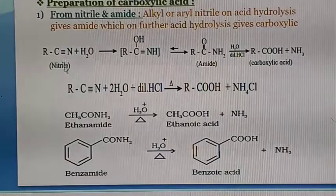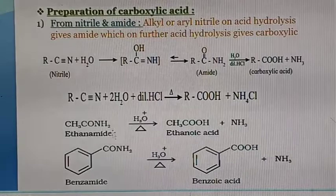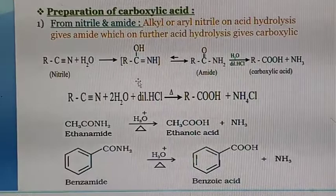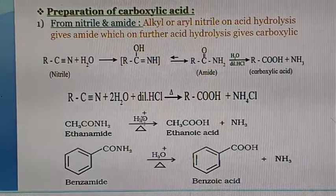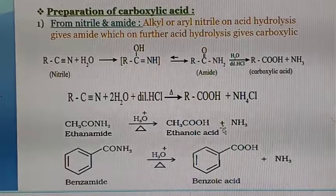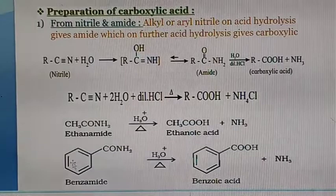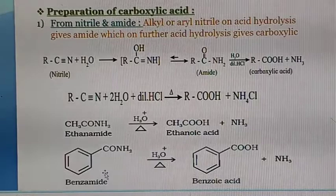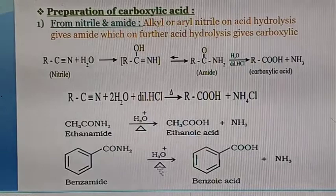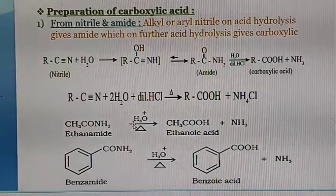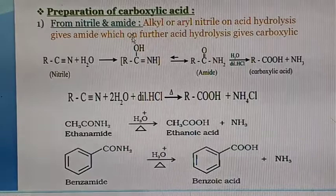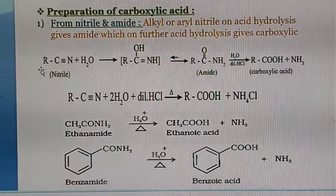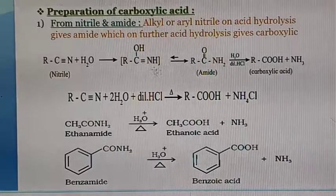For example, CH₃C≡N plus water gives CH₃CONH₂. This CH₃CONH₂ on acid hydrolysis gives ethanoic acid as a product. Similarly, when benzonitrile (C₆H₅C≡N) is treated with water it gives benzamide, which on acid hydrolysis gives the corresponding product, benzoic acid. This is how we prepare carboxylic acid from nitrile and amide — you can take different examples, for instance replacing R with C₂H₅.